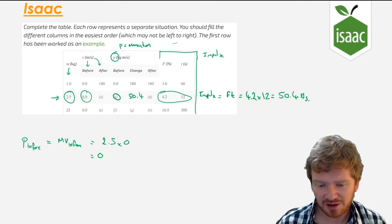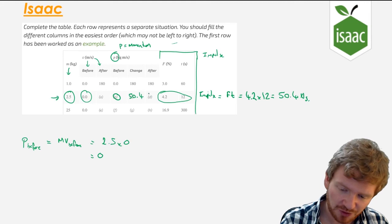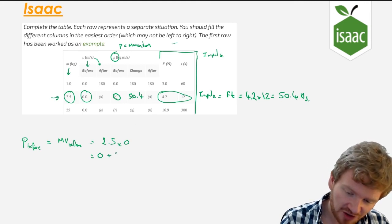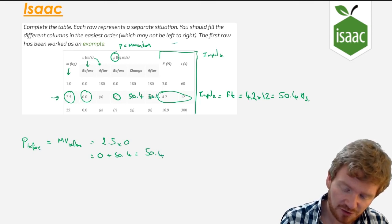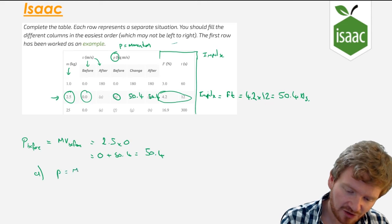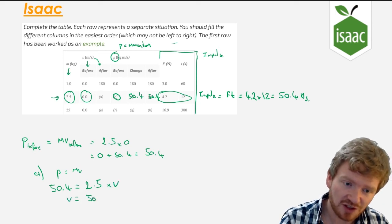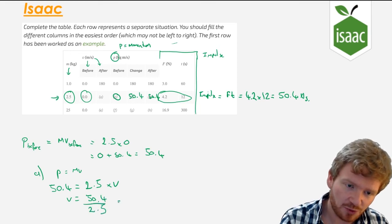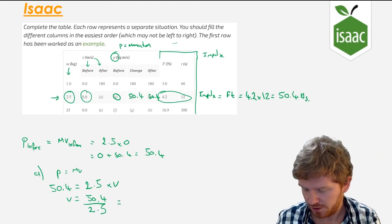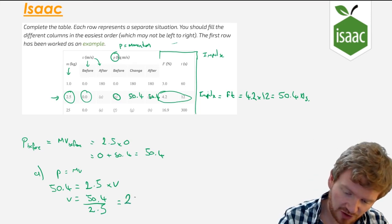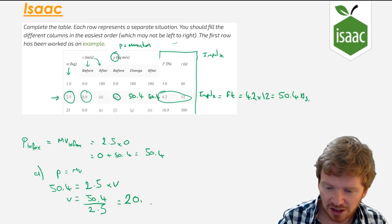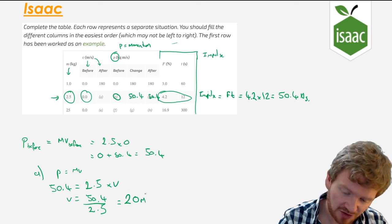Now I can say, well, if before momentum was 0, after the momentum was 50.4. Sorry, the change was 50.4. Therefore, 0 plus my change of 50.4 gives me an after momentum of 50.4. Now, can I work out A? To work out A, I can say momentum is mass times velocity. I now know that momentum afterwards was 50.4. I know that my mass is 2.5 and so I'm trying to find velocity. Again, rearrange the equation. My velocity is 50.4 divided by 2.5. Plug that into a calculator. That comes out as 20. And if I'm going to give it to the correct number of significant figures, all of these are 2 significant figures. So this needs to be 2 significant figures as well. So that will be 20 meters per second.